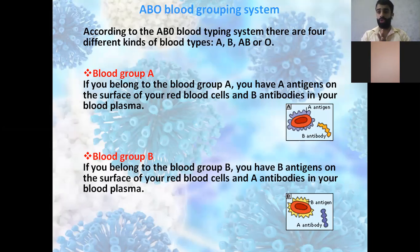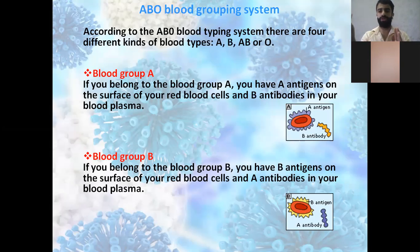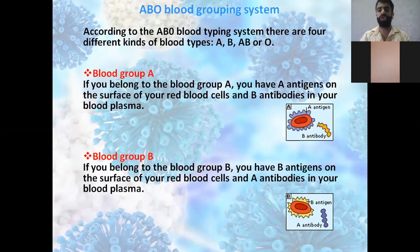Blood group A: you have antigen A on the surface of your red blood cells, and antibody B in your blood plasma. Blood group B: you have antigen B and antibody A. The antigen and its corresponding antibody should not be present within the same blood group, otherwise we get agglutination.